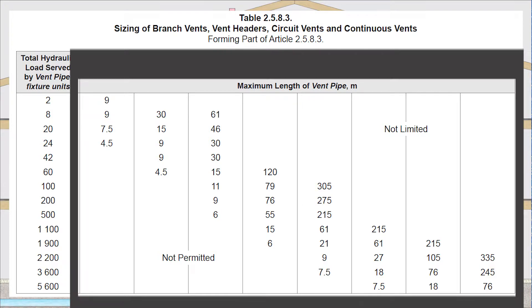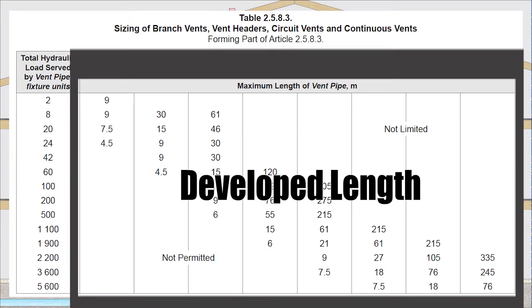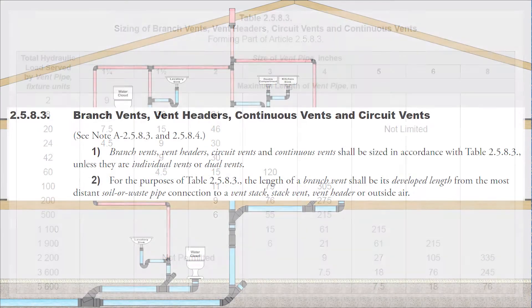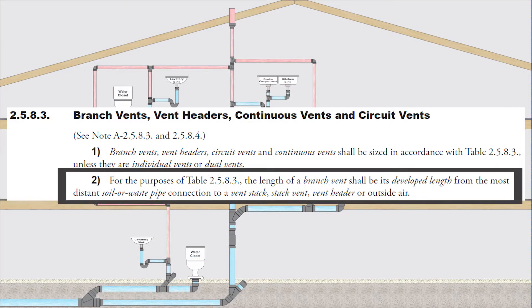That maximum length of vent pipe is called developed length. And in order to figure out how we measure developed length, we need to look at the code, clause 2.5.8.3 number 2. For the purposes of table 2.5.8.3, the length of a branch vent shall be its developed length from the most distant soil or waste pipe connection to a vent stack, stack vent, vent header, or outside air.